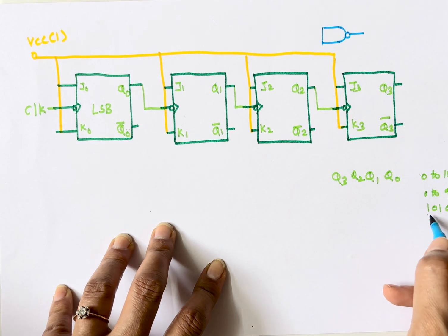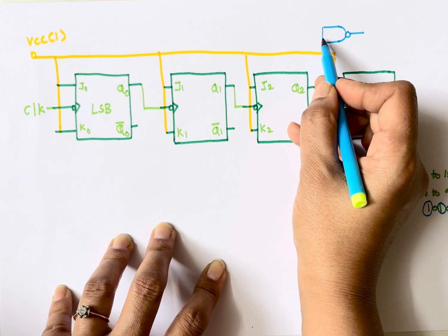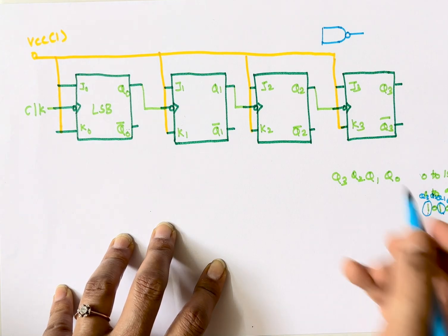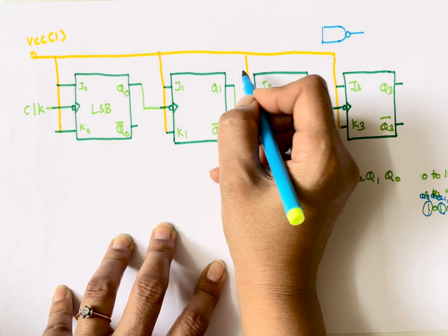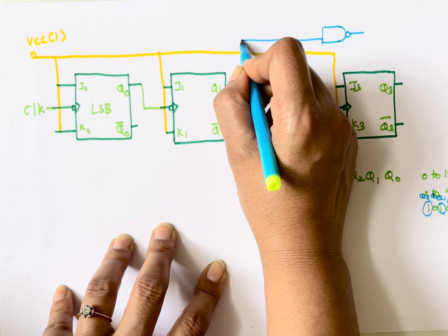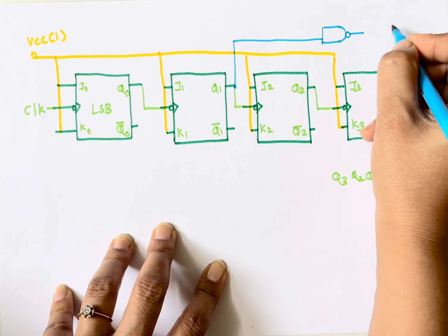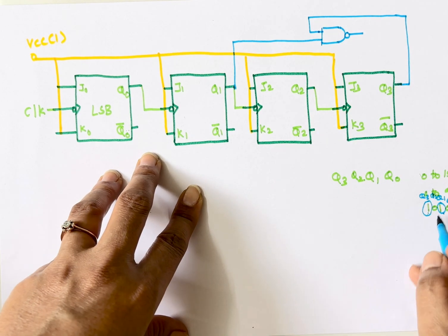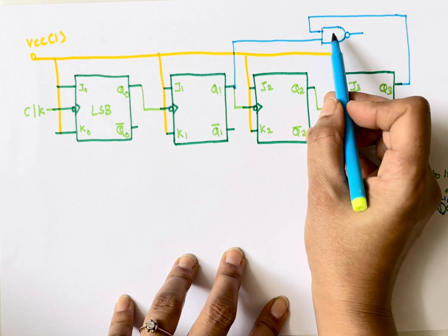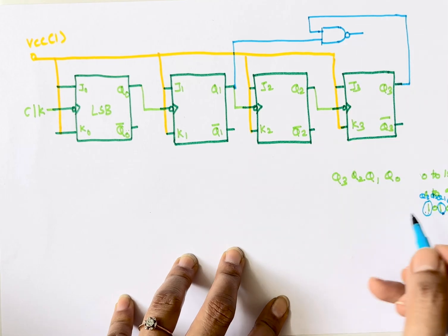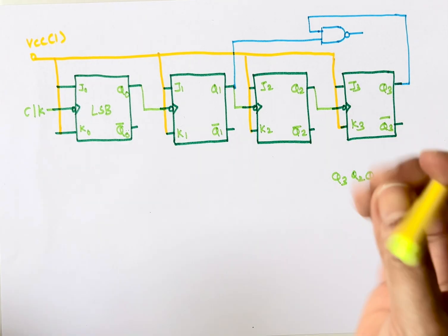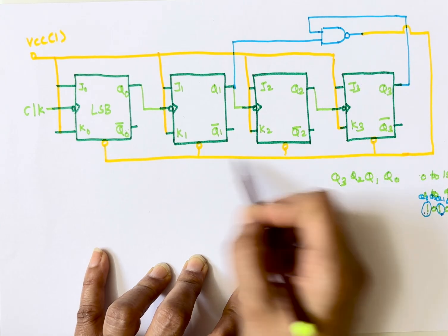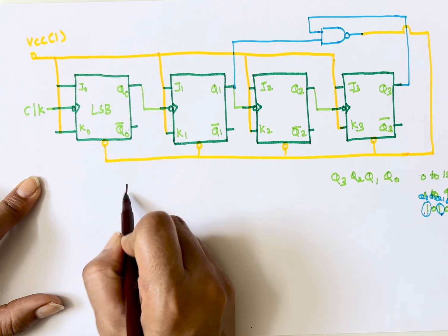To achieve the reset, I'll use one NAND gate and connect the outputs that are 1 in the binary representation of 10 (which is 1010) to its inputs. Here Q3 is 1 and Q1 is 1, so I'll connect Q1 and Q3 to the inputs of the NAND gate. When both Q3 and Q1 become 1, the NAND gate receives 1-1 at the input and outputs 0. We then connect this output to the clear input of all flip-flops.